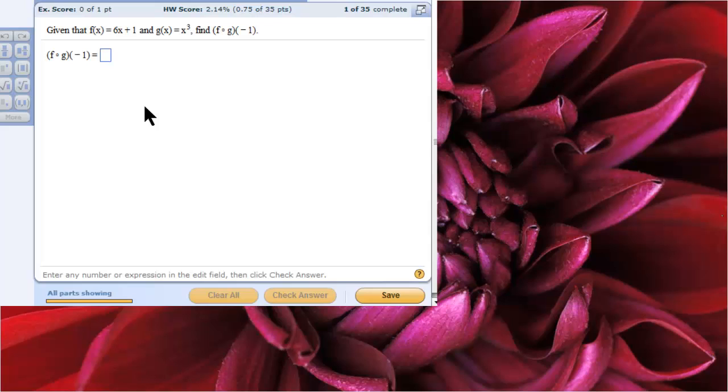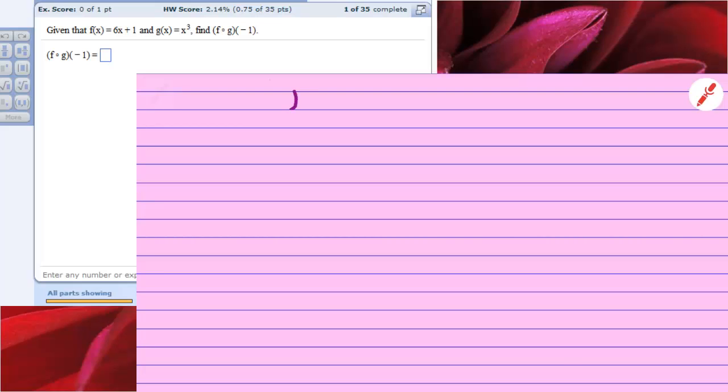We've got f of x equals 6x plus 1 and g of x, who appears to be forever cursed to be pink, the poor thing, equals x to the third. Now, we're not putting in, we're not taking g of x and putting it into f. We are going to take g of negative 1, so we have to find out what that equals. g of negative 1 is going to be parentheses negative 1 to the third power, which is negative 1 times negative 1 times negative 1, which is negative 1. Think of that.